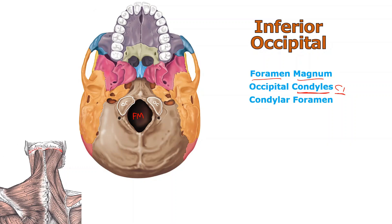If you look right behind each of the condyles — posterior to the condyles — there are little tiny holes. Remember, foramen means a hole. So those are called the condylar foramina — foramina being the plural of foramen. I can see the two condylar foramina just posterior to the two occipital condyles.